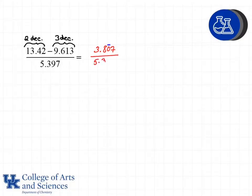Now we want to take this next step which is dividing. So now I'm dividing 3.807 divided by 5.397 and we get 0.705391 dot dot dot, continuing on our calculator.